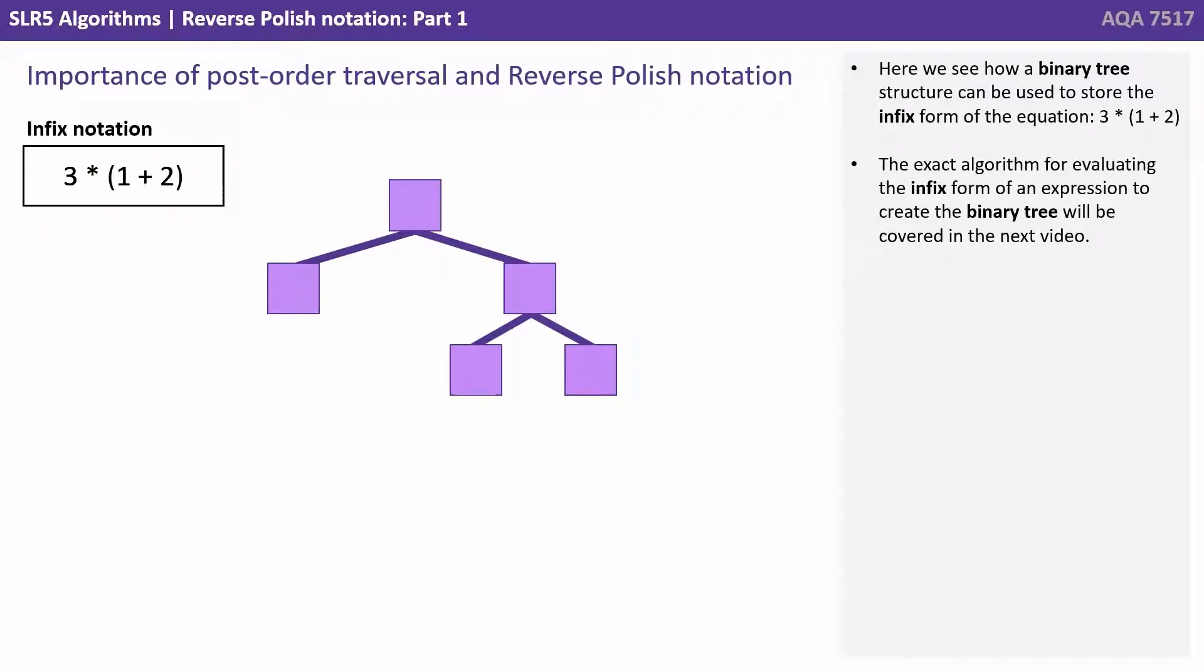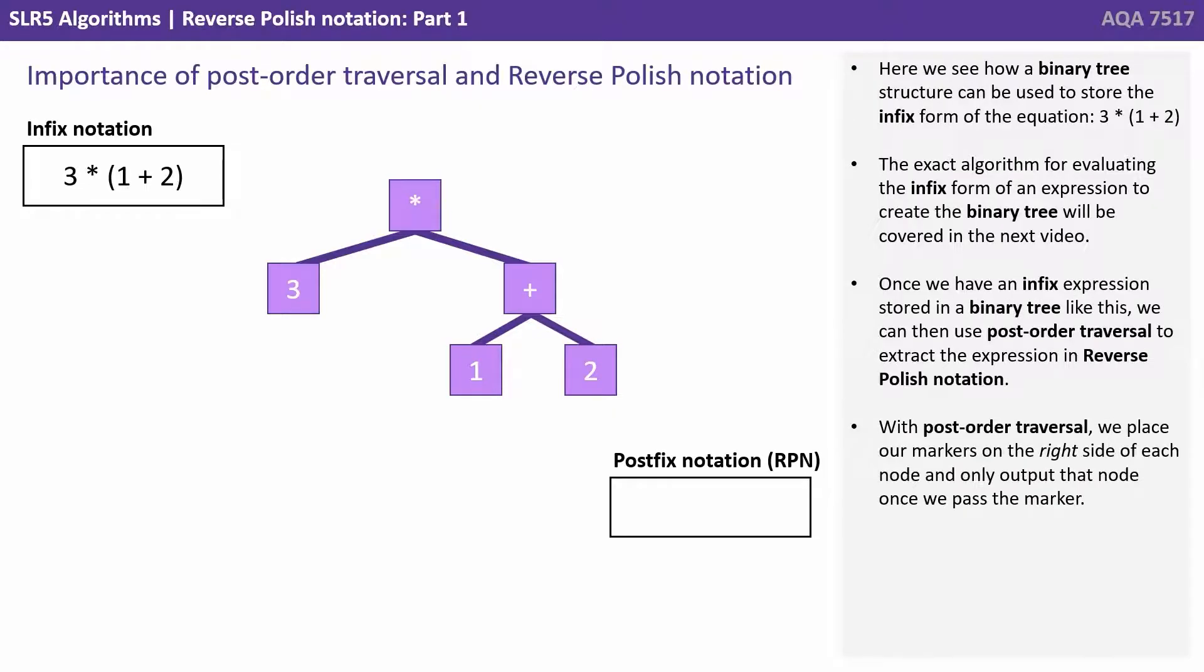Here we see how a binary tree structure can be used to store the infix form of the equation 3 times 1 plus 2. The exact algorithm for evaluating the infix form of an expression to create the binary tree is going to be covered in the next video. Once we have an infix expression stored in a binary tree like this, we can then use post-order traversal to extract the expression in its reversed Polish notation form.